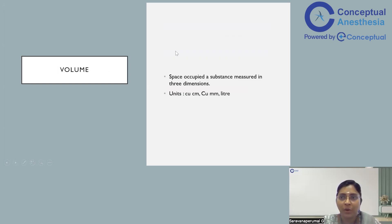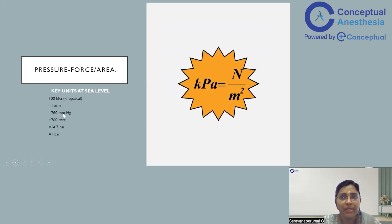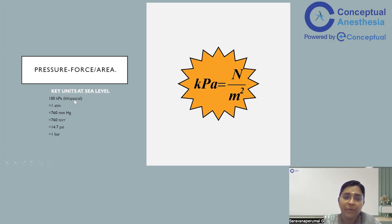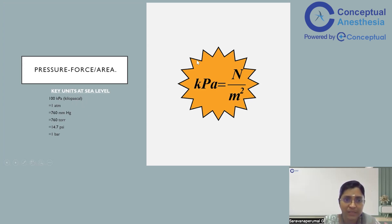Volume is the space occupied by a substance at any given point, measured in a three-dimensional manner — either as cubic millimeter, cubic meter, or as a litre. Pressure is force divided by area, so kilopascal is Newton divided by meter square. There are many units in which pressure is measured, and it is imperative to know all of these because pressure gauges may show bar or PSI. 100 kilopascals equals one atmosphere, which is 760 mmHg, or 760 Torr, or 14.7 PSI, which equals 1 bar. Our oxygen cylinder will be somewhere close to 2000 PSIG or 137 bar.